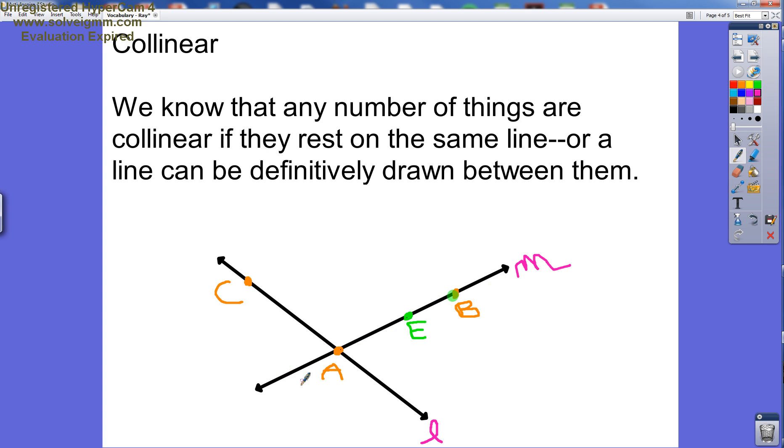So A, E, and B are all on line M together. We know therefore that point A, point E, and point B are all three of them collinear.